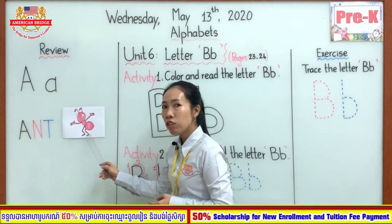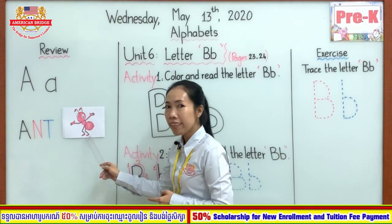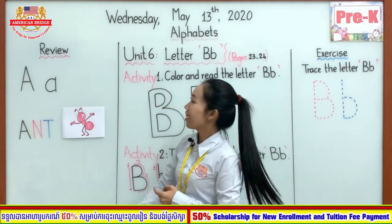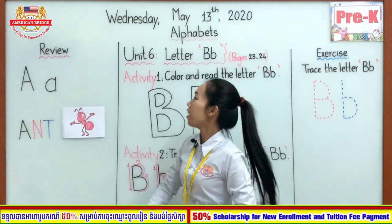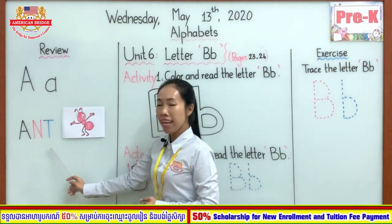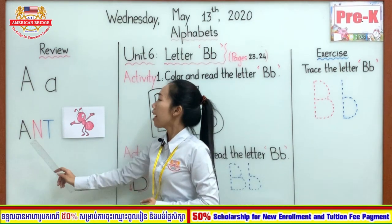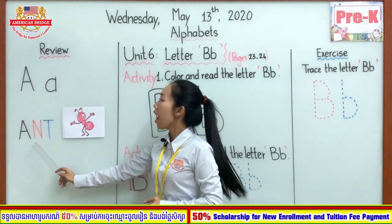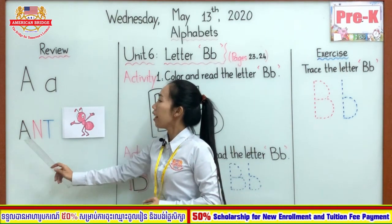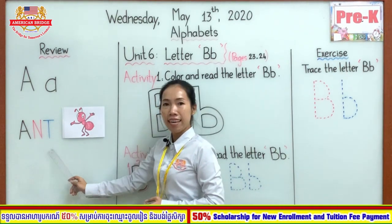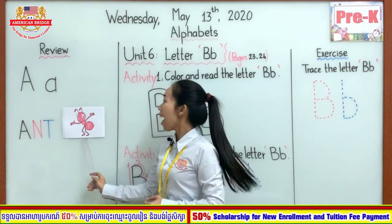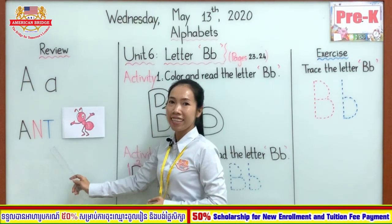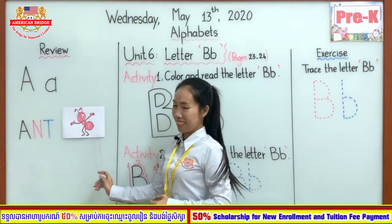Who knows what is this? Yeah, this is an ant. Say together: ant. A, ant, T. Ant. A, ant, T. Ant. A, ant, T. Ant. Good.